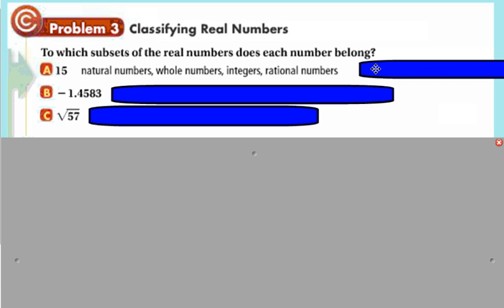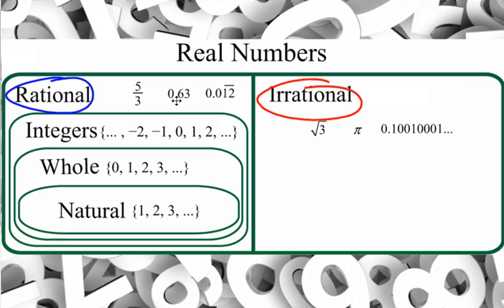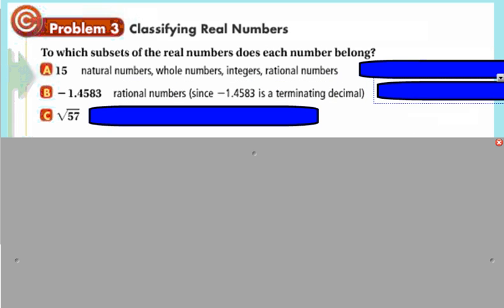Negative 1.4583. So it's definitely not a natural number, or a whole number, or an integer, because those don't include decimals. It does end, so I think it's just a rational number. It's just a decimal in that rational number category. It's a terminating decimal.